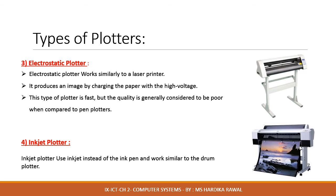Electrostatic plotters work similar to a laser printer. They produce an image by charging the paper with high voltage; this voltage attracts the toner, which is then melted into the paper with heat. This type of plotter is fast but the quality is generally considered to be poor compared to pen plotters. Inkjet plotters use ink instead of ink pens and work similar to the drum plotter.